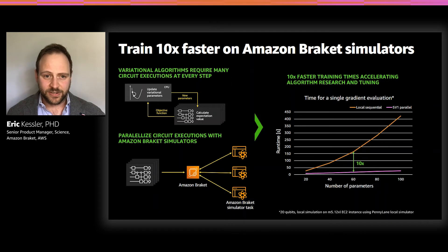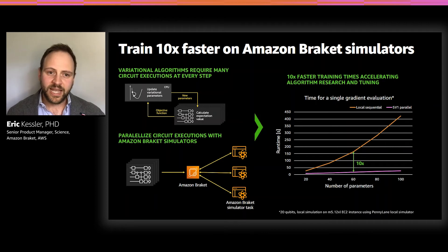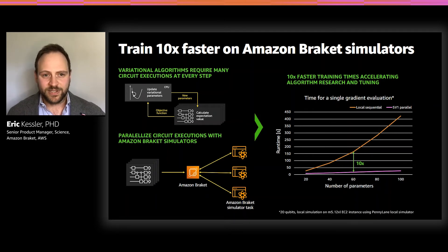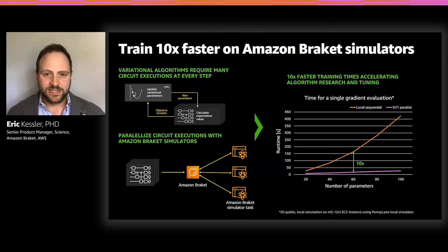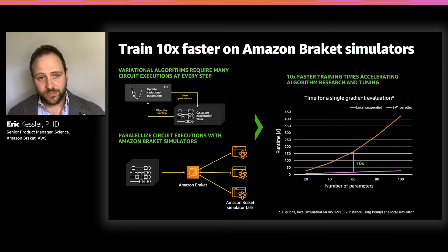On the x-axis, we see the number of parameters, and we're plotting the time it takes for a single gradient evaluation. The number of parameters is roughly proportional to the number of circuits I need to evaluate at every step. And you see that compared to a sequential evaluation, already for 20 qubits we see a 10x improvement — and that improvement gets larger as we go to larger problems with more qubits and more parameters to solve.